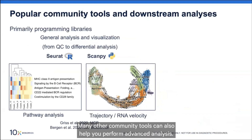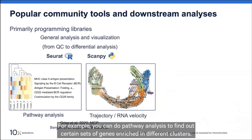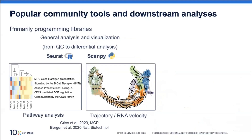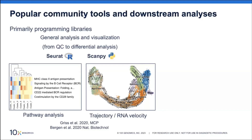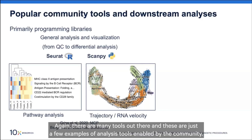Many other community tools can also help you perform advanced analysis. For example, you can do pathway analysis to find out certain sets of genes enriched in different clusters. You can also perform trajectory or RNA velocity analysis to infer the transition between cell states. Again, there are many tools out there, and these are just a few examples of analyses enabled by the community.